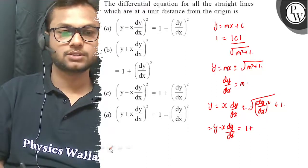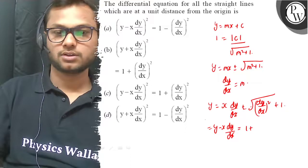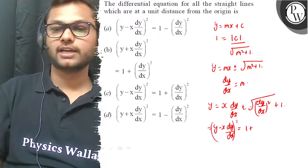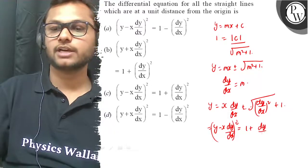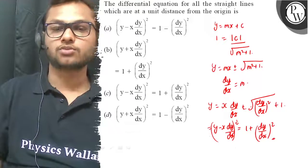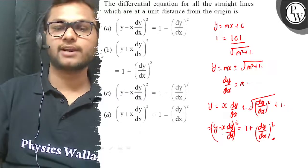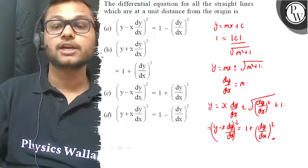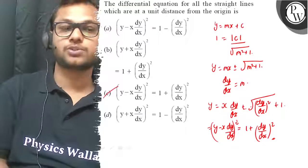So it becomes - we'll square both sides, which eliminates the square root. So our equation is y minus x dy by dx whole square is equals to 1 plus dy by dx whole square. That is option C. Best of luck.